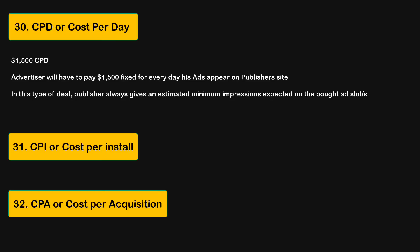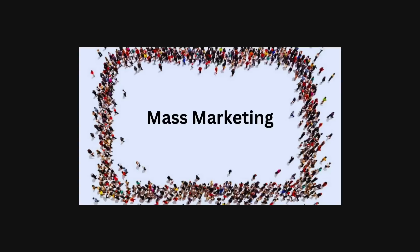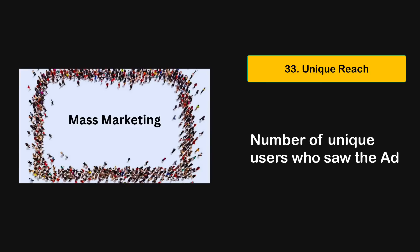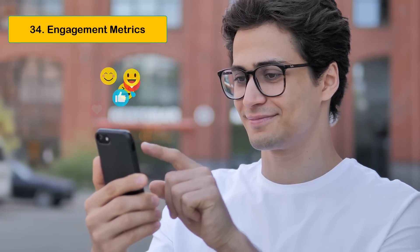In some cases, advertisers want to reach as many people as possible to let them know about an offer or a launch. Using programmatic advertising, we can know how many unique people saw an ad on a publisher's website — this metric is called unique reach.